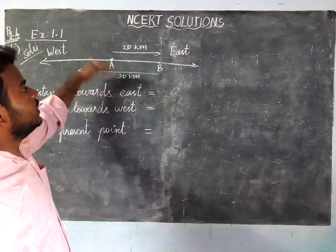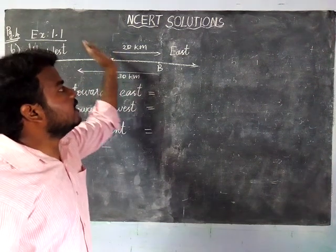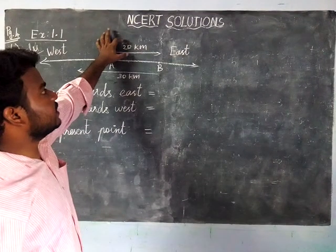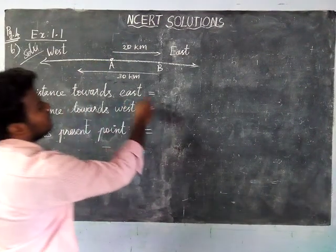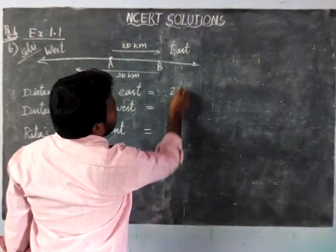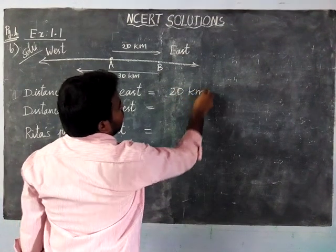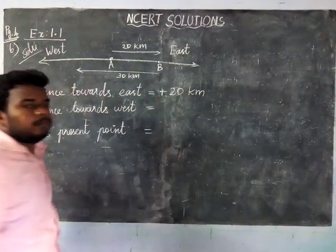Now, they are asking that if Ritu is walking on east side, that is indicated as positive integer. So distance towards east, they ask us to mark it as positive integer, so we are marking as plus 20 km.